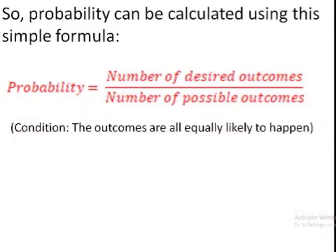So we can formulate a formula for probability. Probability equals number of desired outcomes divided by number of possible outcomes. One thing to be noted here is that the outcomes are all equally likely to happen. This formula is valid when this is the case.